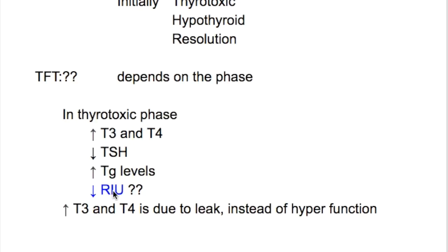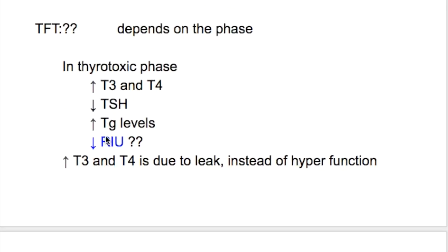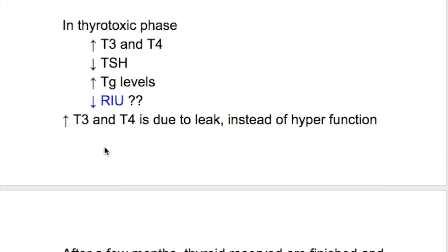Why is radioiodine uptake decreased despite thyrotoxicosis? Because this thyrotoxicosis is due to leakage from the follicle — it's not due to hyperfunction of the thyroid gland. The condition damages the follicle, causing release of unbound T4 into the circulation along with thyroglobulin, and a decreased radioiodine uptake.